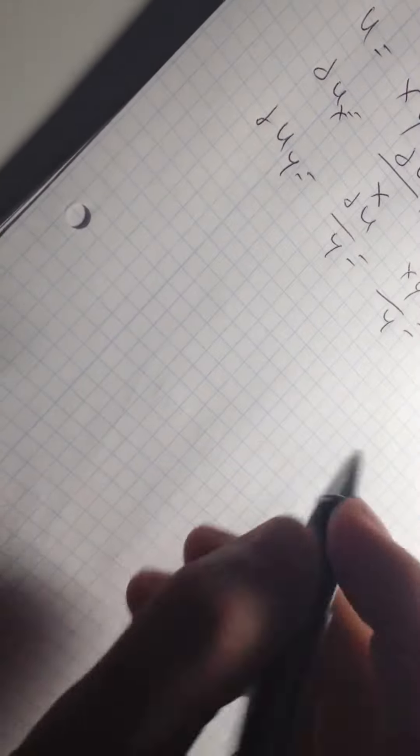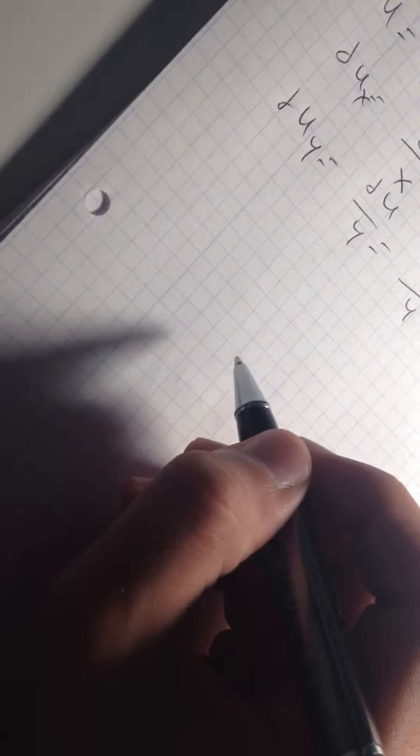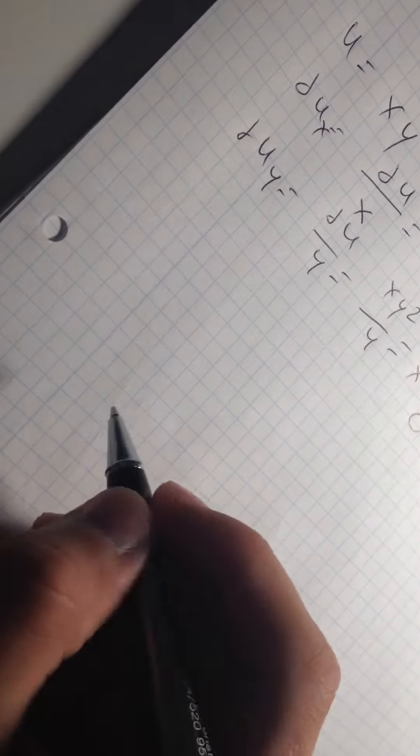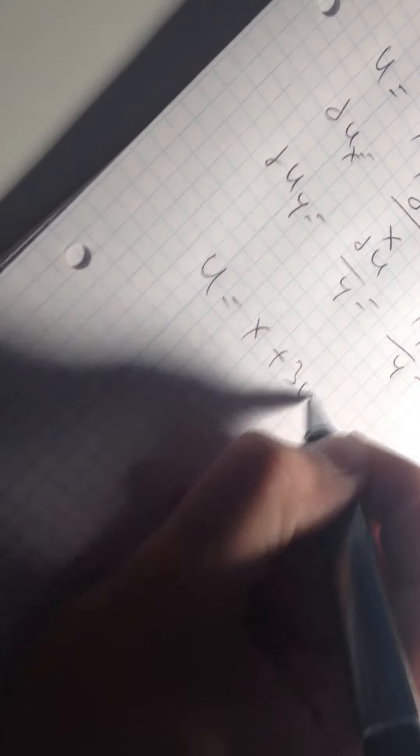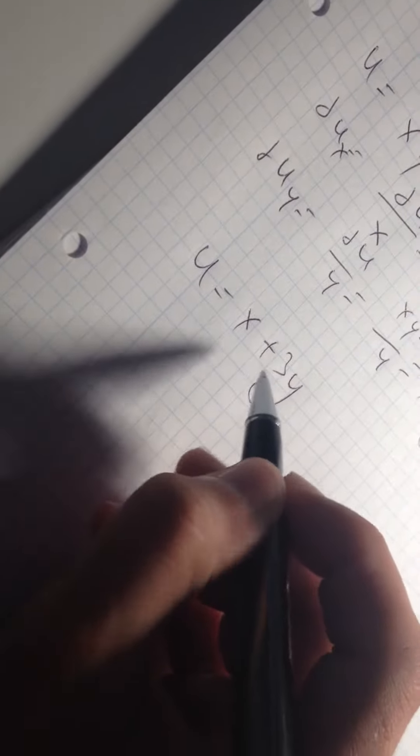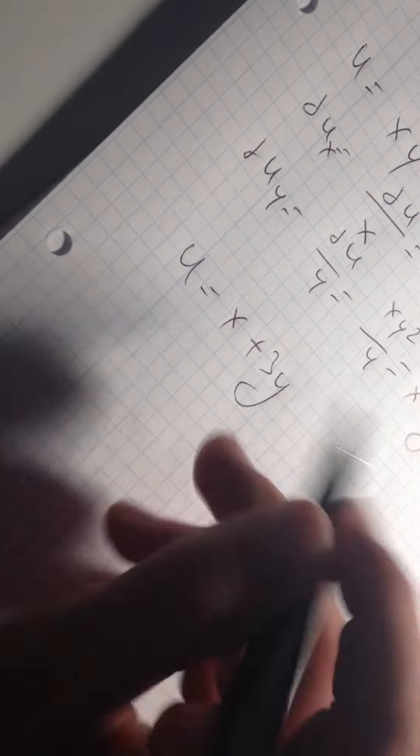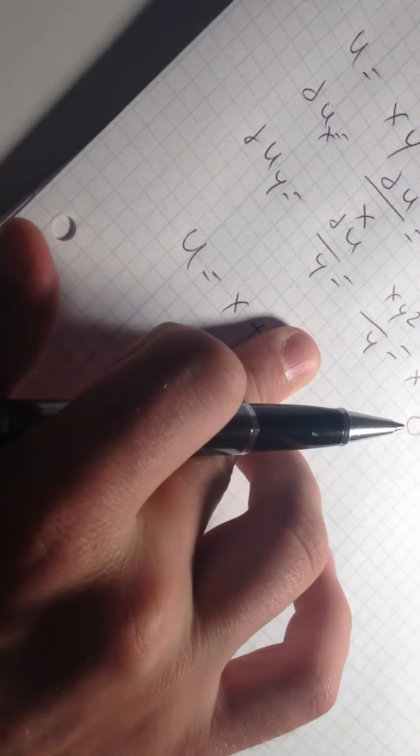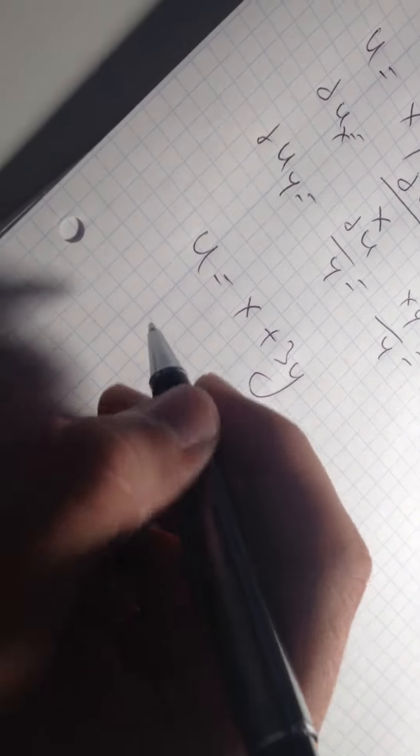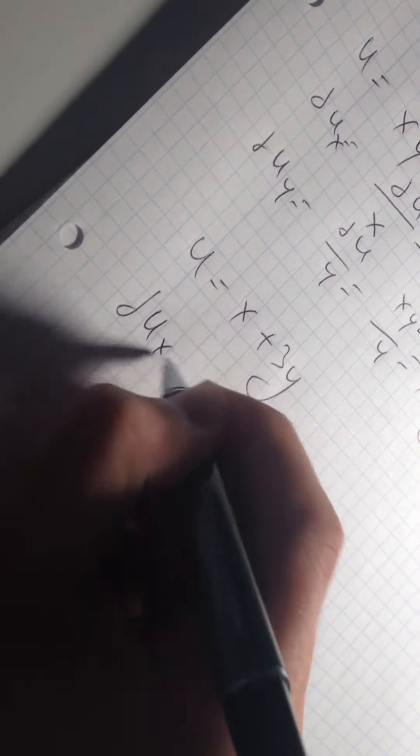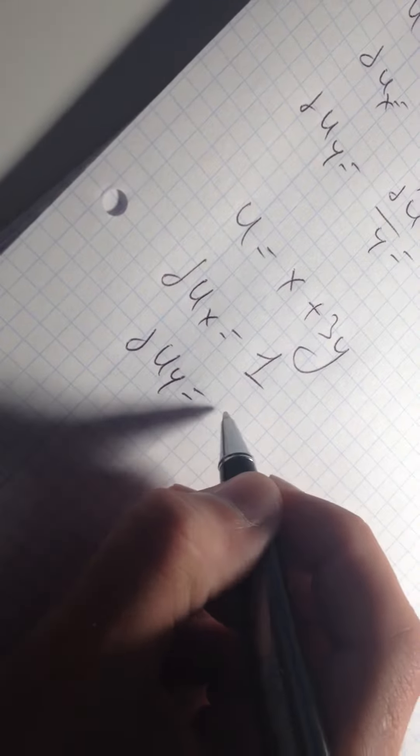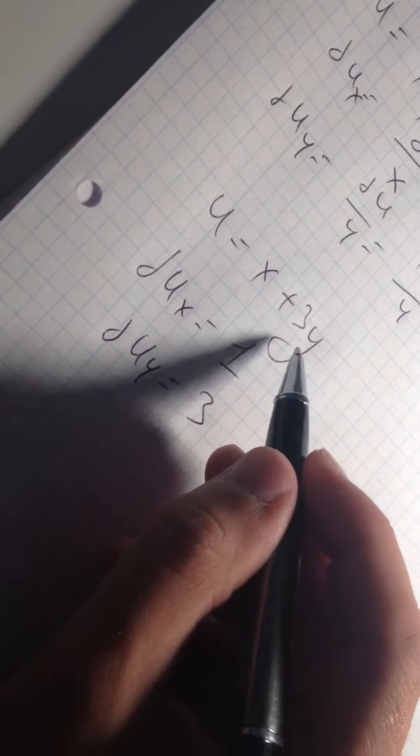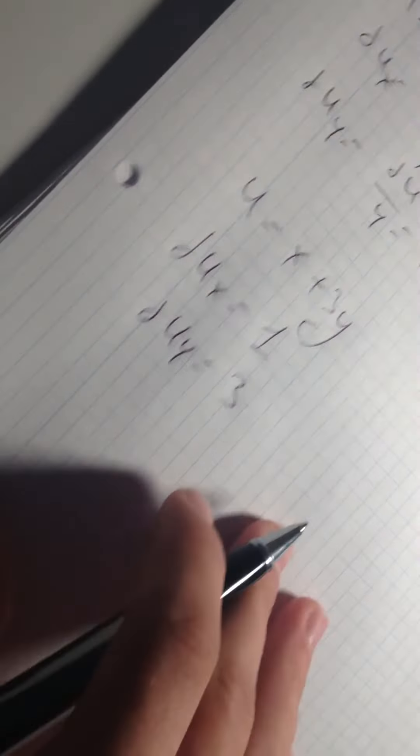This is the first example. Now the second example: if you have the partial derivative and the function is like y = x + 3y. If we have this symbol with plus or minus, we don't need to use this at all when we want to find the derivative. That's why for x it's going to be 1, and for y it's going to be 3.